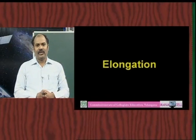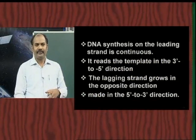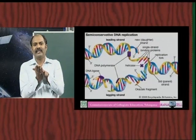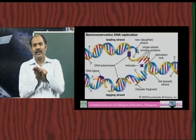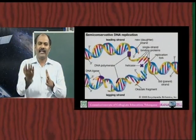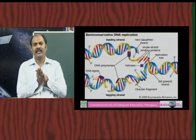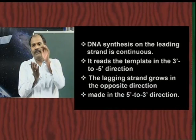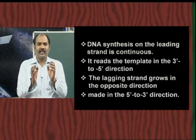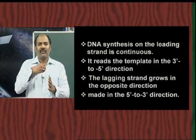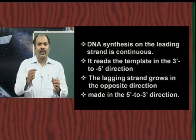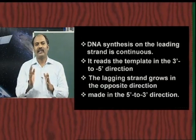After formation of the replication fork, the primase enzyme binds to the single-stranded DNA and synthesizes the primer. Using that primer, the strand undergoes further extension with the help of DNA polymerase 3. In the elongation stage, within the replication bubble, two strands are present: one strand is continuously synthesized — this is the leading strand — and another strand is discontinuously synthesized — this is the lagging strand.